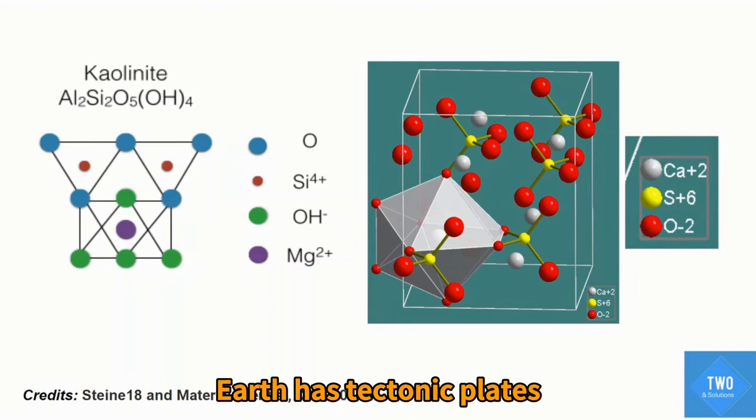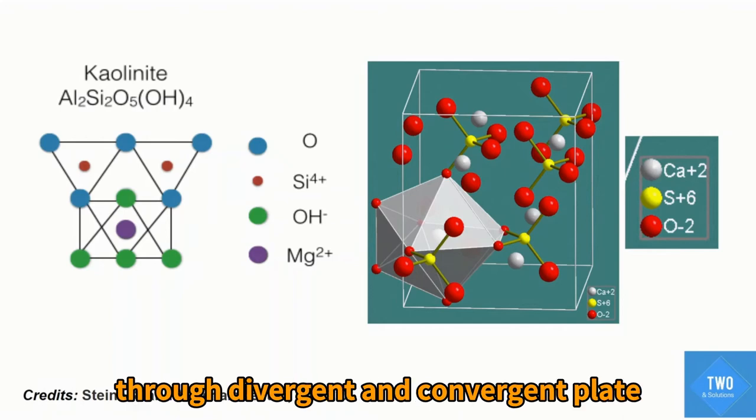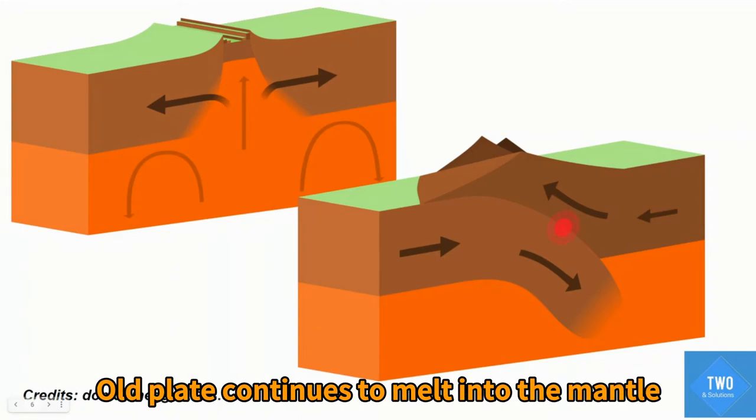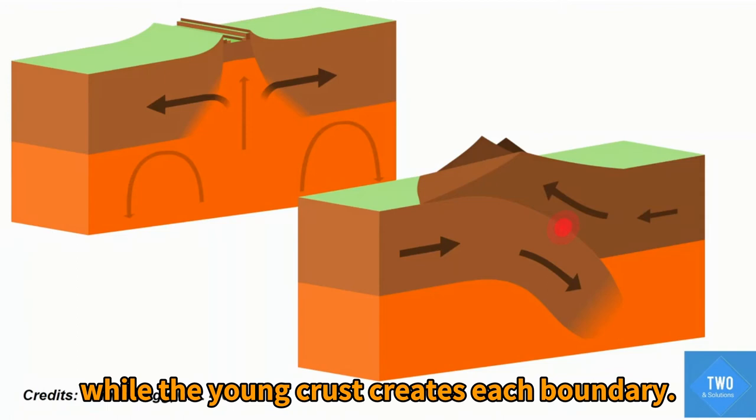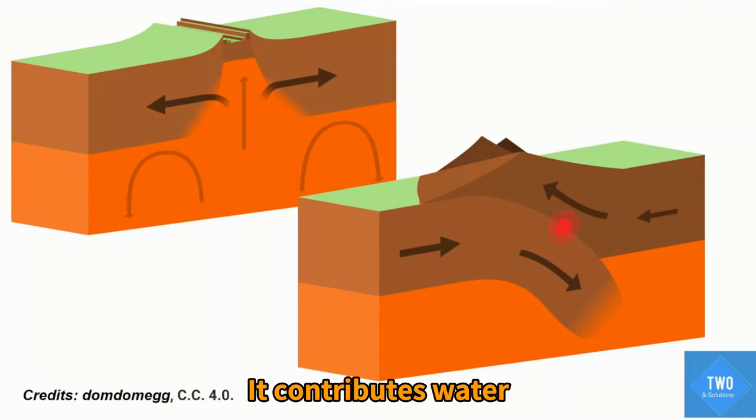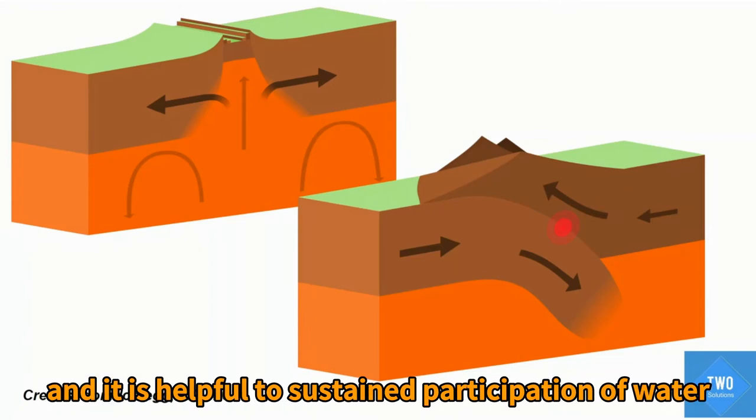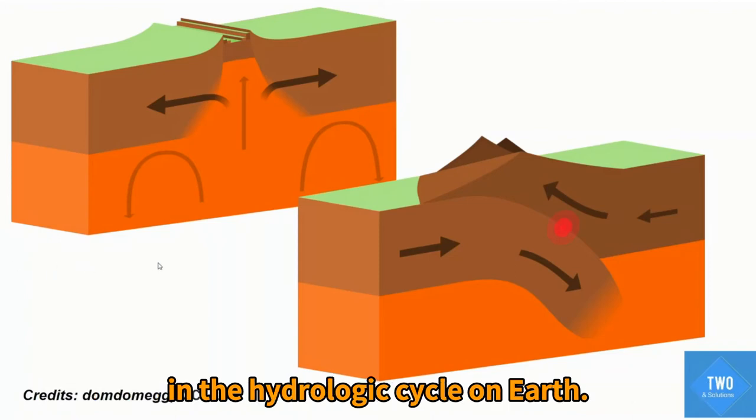Earth has tectonic plates, as you know, through divergent and convergent plate margins and boundaries. Old crust continues to melt into the mantle while young crust is created at each boundary. It contributes water molecules back to the atmosphere and helps to perpetuate water in the hydrological cycle on Earth.